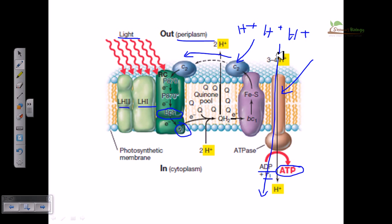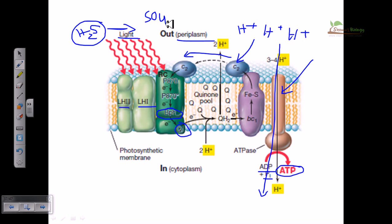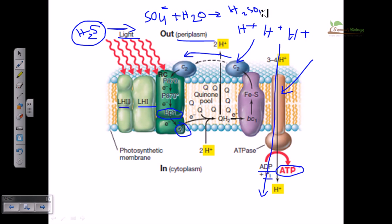In purple sulfur bacteria, the very first electron donor is H2S. After the reaction, SO4 2- is produced, which reacts with H2O to form H2SO4. Therefore, if you look at purple sulfur bacteria (PSBs), you can find the presence of acid in their environment. Most of them are acidophiles because they generate an acidic environment outside their cell — all the sulfur is oxidized and after sulfur oxidation it converts itself to sulfate, acidifying the surroundings.